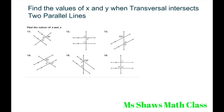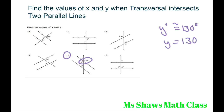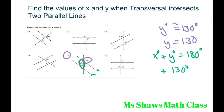For number 15, intersecting lines are congruent. So Y degrees is congruent with 130 degrees — Y equals 130. The consecutive interior angle theorem states that if lines M and N are parallel, then X degrees plus Y degrees equals 180 degrees — they're supplementary. Since Y degrees is 130 degrees, X must be 50. X equals 50.